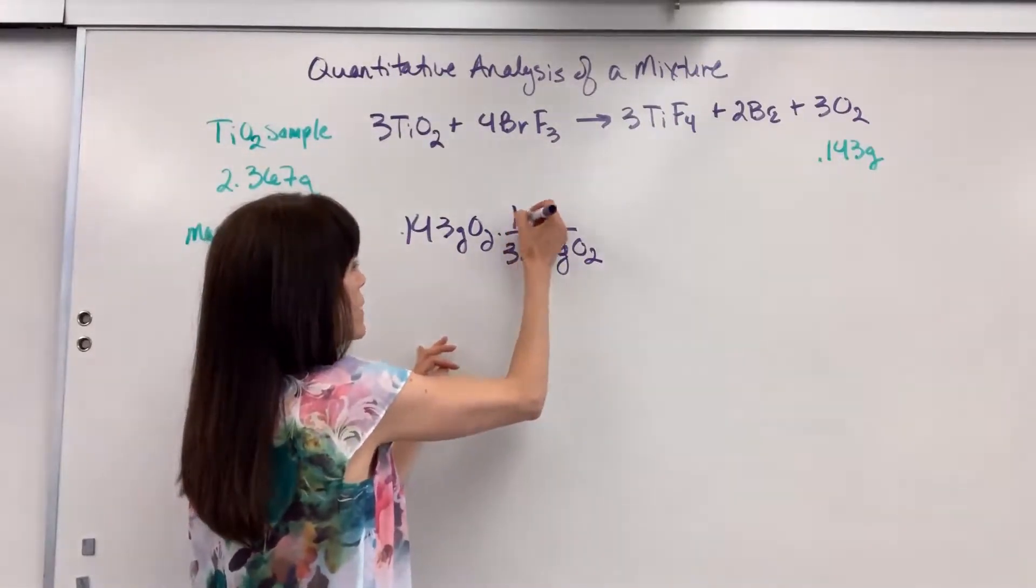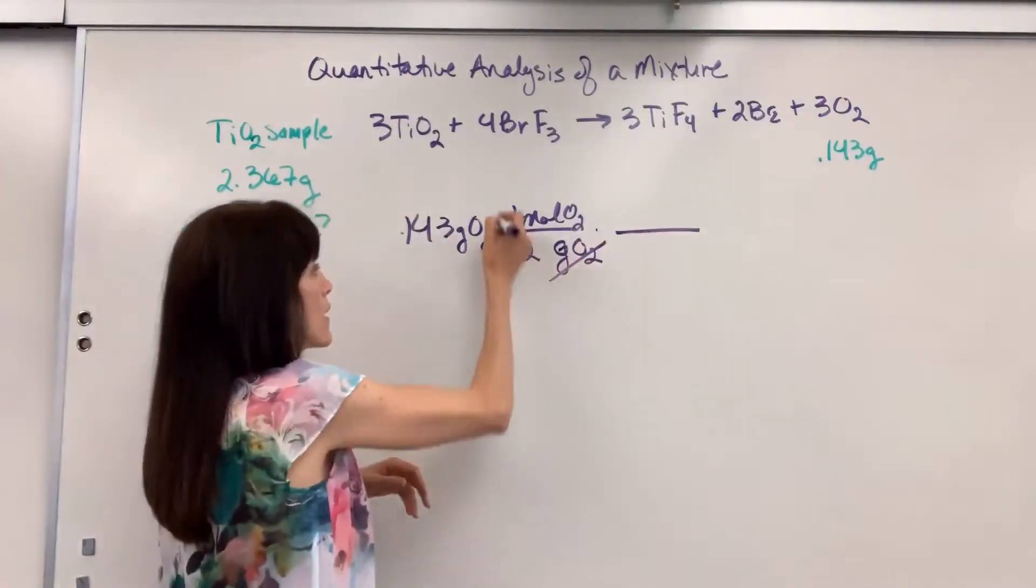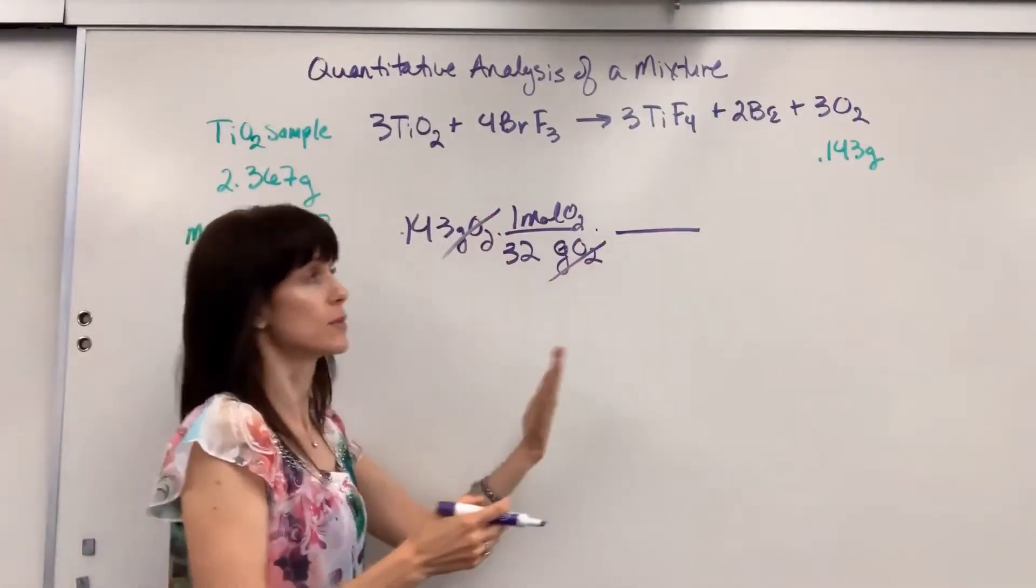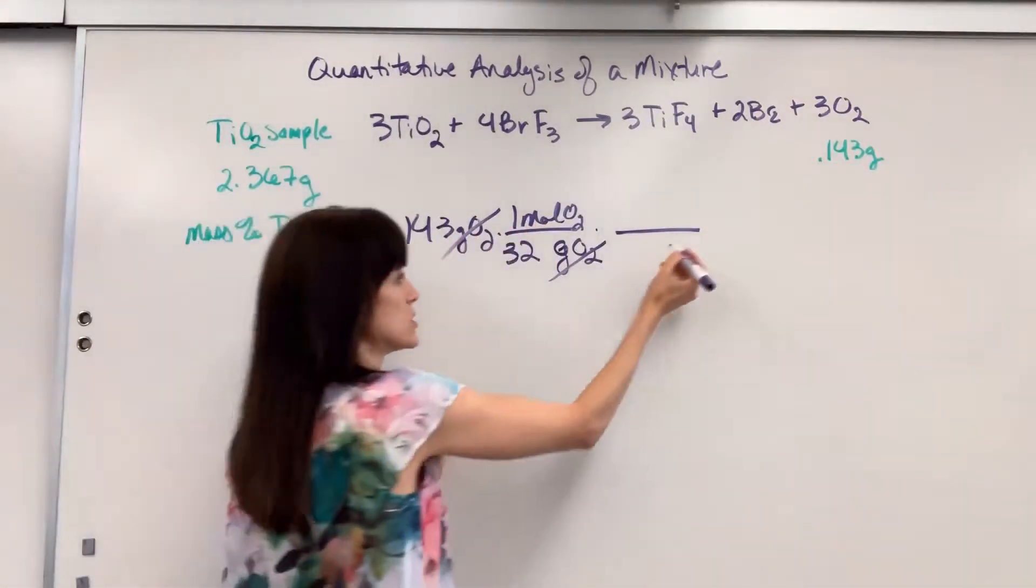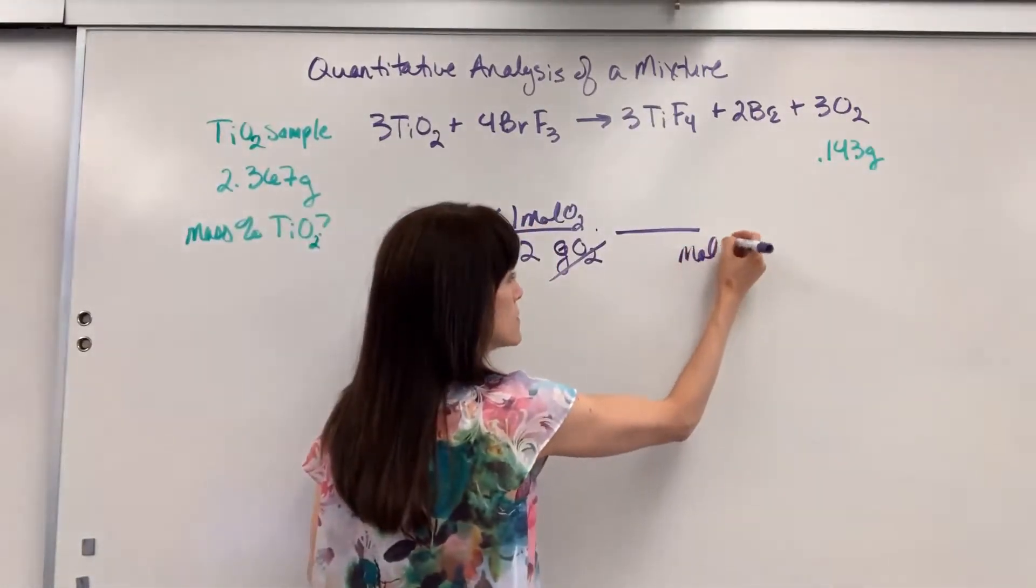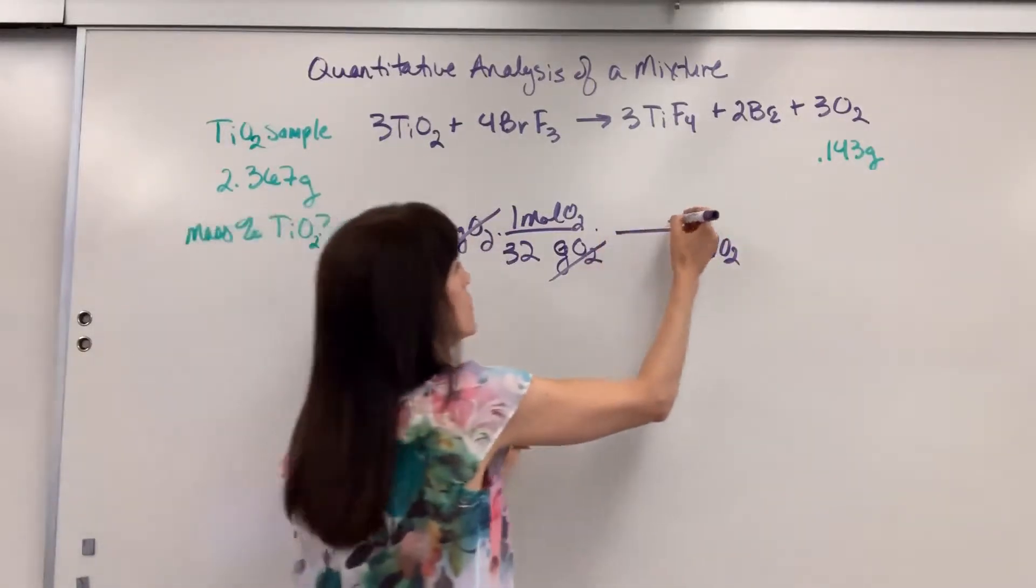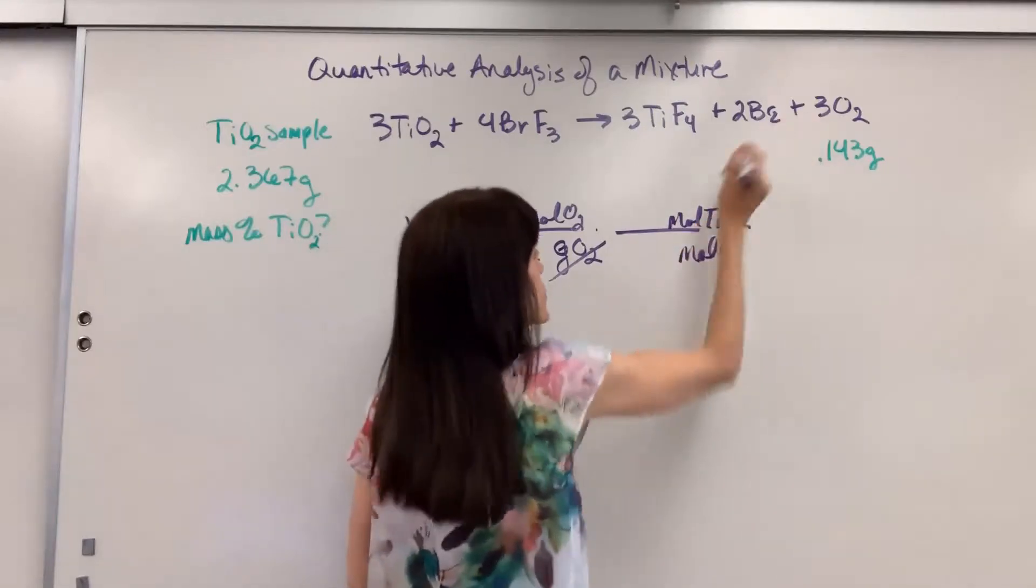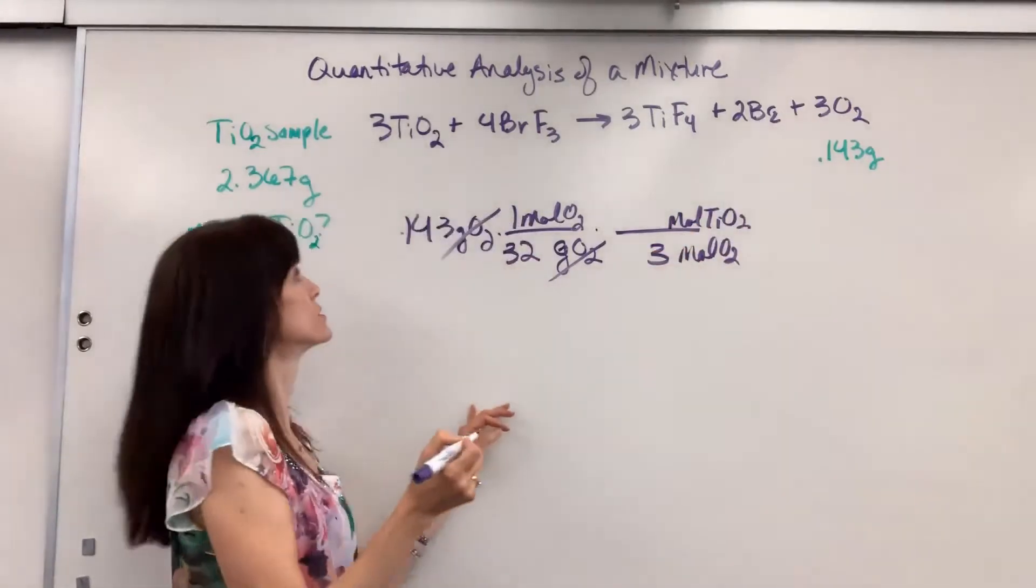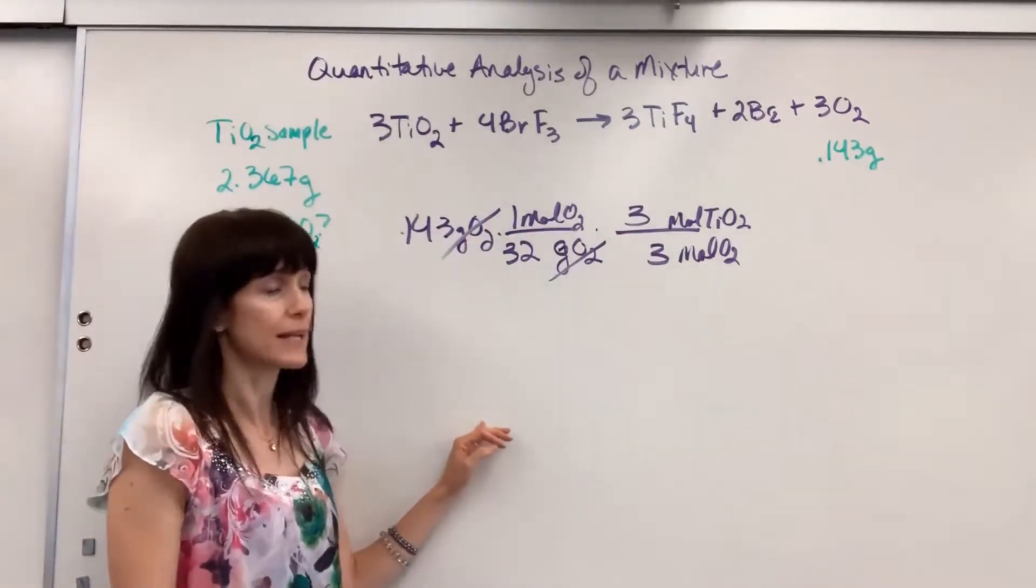And we've got one mole of oxygen for that mass. Grams of oxygen canceled. Now we can walk the bridge from oxygen to the titanium oxide. I want to get rid of moles of oxygen. So I put that in the denominator. So it cancels moles of oxygen. And then I want moles of that titanium four oxide. Three moles of the oxygen came from three moles of that titanium four oxide.